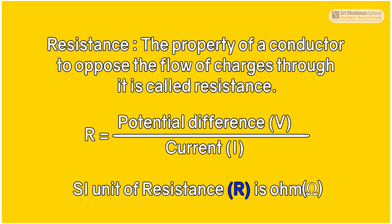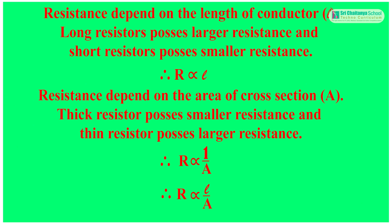The SI unit of resistance is Ohm. Resistance depends on the length of the conductor. Long resistors possess larger resistance and short resistors possess smaller resistance. Therefore, R is directly proportional to L.